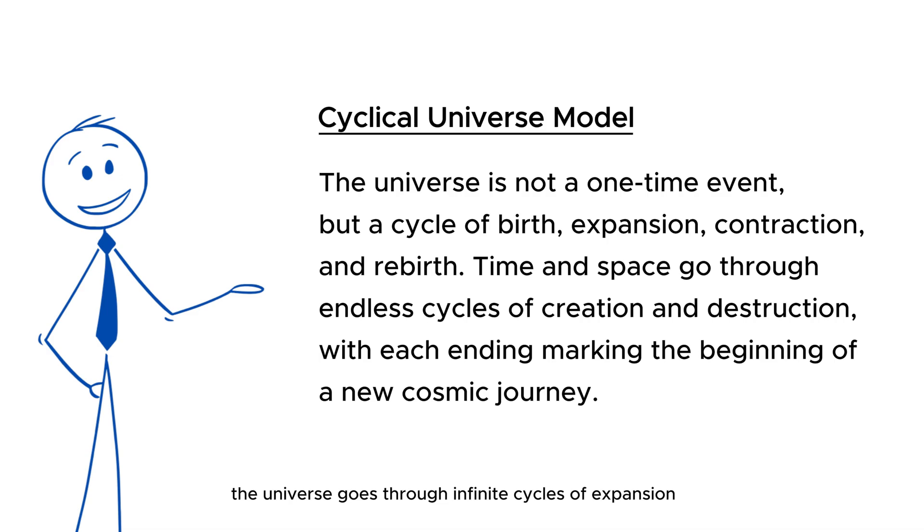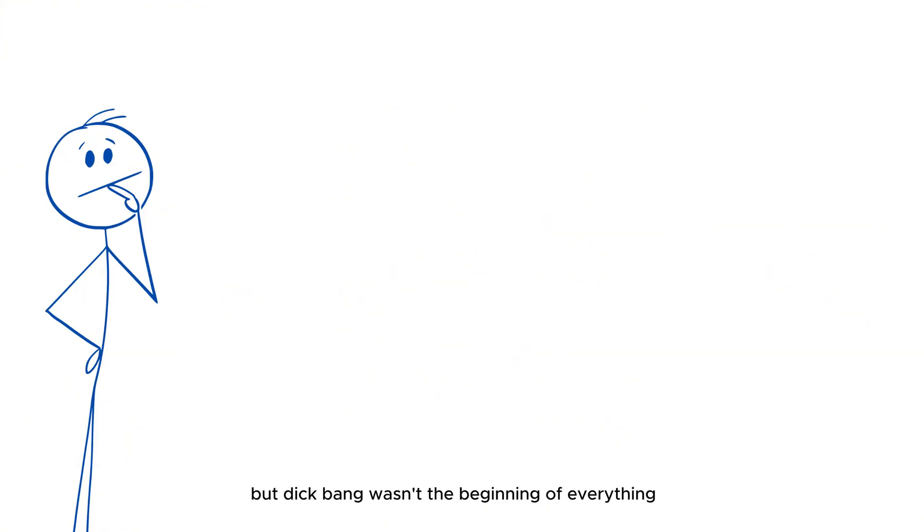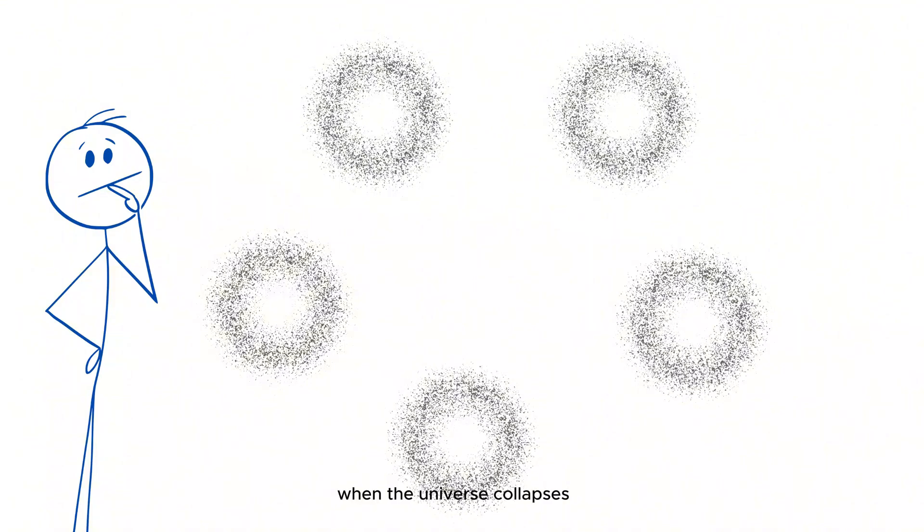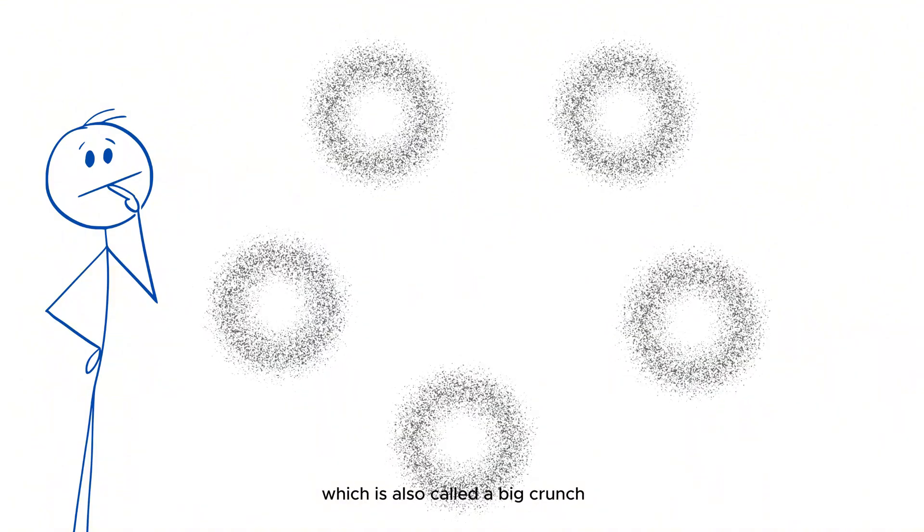In this theory, the universe goes through infinite cycles of expansion and contraction, like a cosmic heartbeat. According to this model, the Big Bang wasn't the beginning of everything. It was just the latest in a series of bangs that happen when the universe collapses, which is also called a Big Crunch, and then explodes outward again.